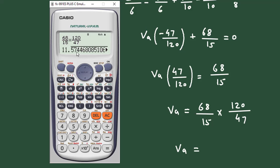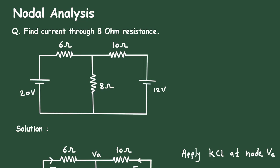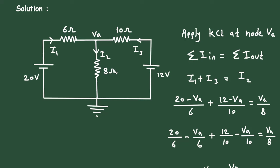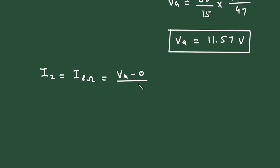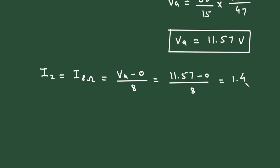So VA equals 11.57 volts. Now we have the value of VA. Next we have to find the current through the 8 ohm resistance, that means we have to find I2. So I2 equals I(8 ohm) equals VA minus 0 divided by 8. The value of VA is 11.57, so 11.57 divided by 8 equals 1.446 ampere. Therefore, the current through the 8 ohm resistance is 1.446 ampere.